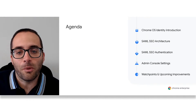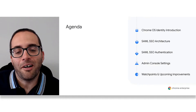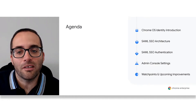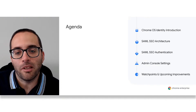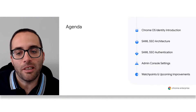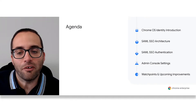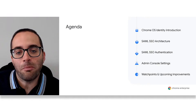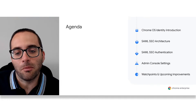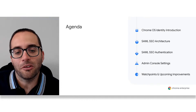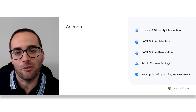The agenda for this webinar is as follows. I'll give a quick introduction to the different identity options available on Chrome OS. We will look at SAML SSO in more detail, outlining the architecture and authentication flow and stepping through configuring SAML SSO in the Google Admin Console. To wrap up, we will look at some watch points to keep in mind when deploying Chrome Enterprise with SAML SSO and quickly touch on some upcoming improvements to the implementation.